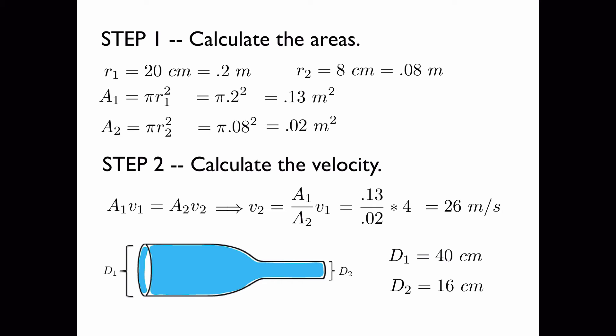Now this phenomenon of the velocity speeding up in a smaller area is quite familiar. Imagine putting your thumb over the end of a hose, and you get a spray. This is because in order for the water to escape through that smaller hole at the same mass flow rate, the water has to speed up.